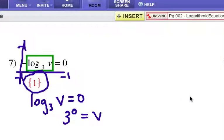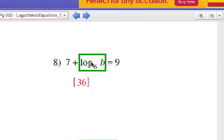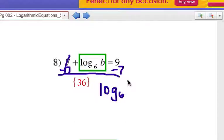Alright, so change it to an exponential equation. Now, here, think of this log base six of b just as something we'll deal with in just a minute. But we want to make sure that we use the rules of algebra here to simplify this. So we're going to subtract seven from each side, which gives me log base six of b, and that equals two.